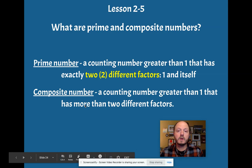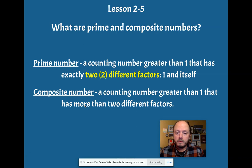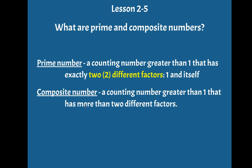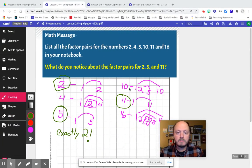And composite number is a counting number greater than 1 that has more than 2 different factors. So, if we look at these numbers again, 10 is composite because it has 1, 2, 3, 4 different factors.